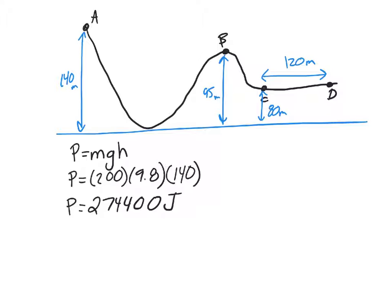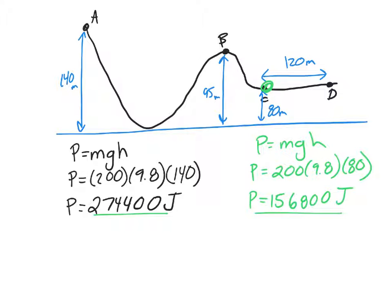Okay, and that is part one. So assume there is no friction between A and C. What is the potential at position C? Well, if we're at C over here, then our potential energy is mass times gravity times height. Potential energy is equal to 200 times 9.8 times the height, which is 80. And we put that in the calculator, and we get 156,800 joules. Notice that this is less than this. That makes a lot of sense because we are closer to the ground. Some of our potential energy is no longer there.